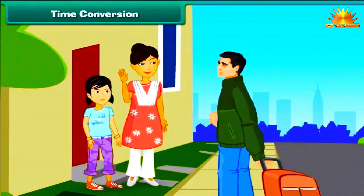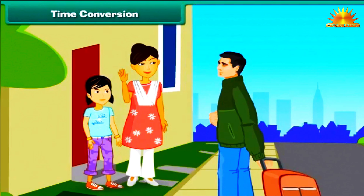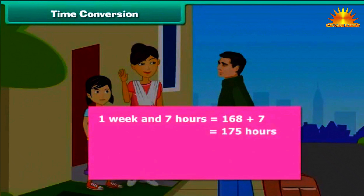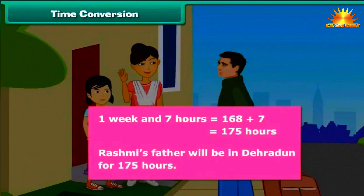Larger to smaller units. Rashmi's father has left for Dehradun. He will be there for a week and 7 hours. Express his stay in Dehradun in hours. 1 week equals 7 days; 1 day equals 24 hours; 7 days equals 24 multiplied by 7, which equals 168 hours. 1 week and 7 hours equals 168 plus 7, which equals 175 hours. Rashmi's father will be in Dehradun for 175 hours.